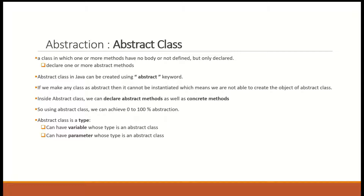Abstract class — it is just a normal Java class, but there is a small difference. A class which may contain one or more methods that do not have a body — the body means the implementation, that means the definition. Abstract class is a class that contains maybe one or more abstract methods. An abstract method is a method with no body, no implementation. Abstract class in Java is created using the keyword 'abstract'. Instead of writing 'public class Employee', you write 'public abstract class Employee'.